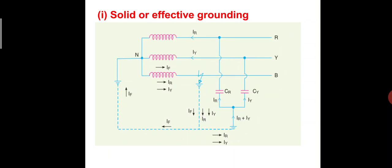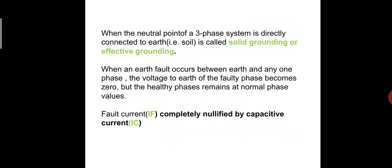First: Solid or Effective Grounding. The neutral point of a three-phase system — R, Y, B — is directly connected to earth through a wire of negligible resistance and reactance. This is called solid grounding or effective grounding. When an earth fault occurs between earth and any one phase, the voltage to earth of the fault phase becomes zero, but the healthy phases remain at normal phase values.